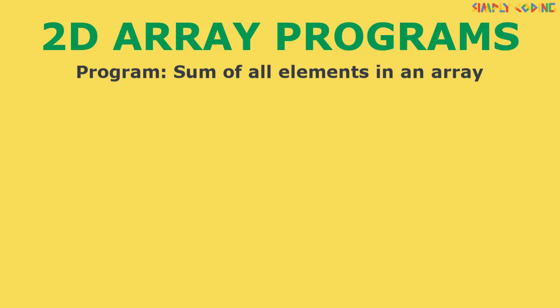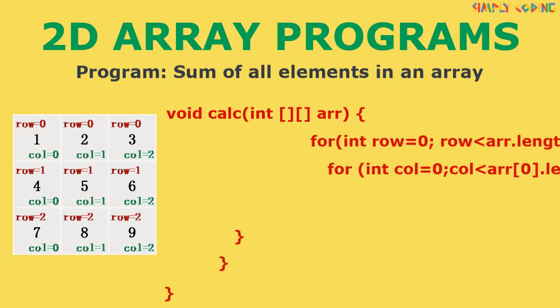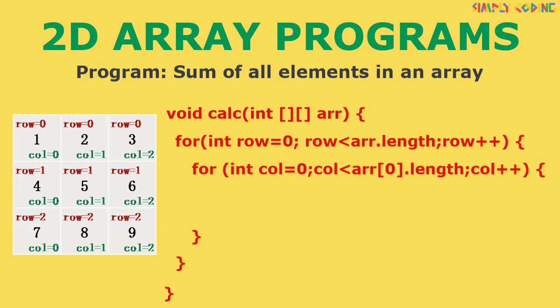Let's take our first program, which is to find the sum of all elements in the array. Let's take this array as an example. We will assume that the array is passed to us as a function parameter. You can also plug the code in main if you like. Now to find the sum, we need to go to each and every element of the array, so we will use our standard nested for loop for traversal.